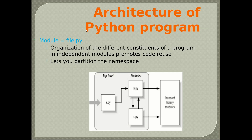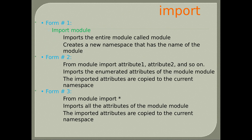Architecture of a Python program: a module is a document that can be written on disk as a file named underscore_name.py. Organization of different components into independent modules promotes code reuse and lets you partition the namespace. At the top level is the class, which uses modules that can be connected with other modules to constitute the standard library. To import — Form 1: import module — imports the entire module and creates a new namespace with the module's name.